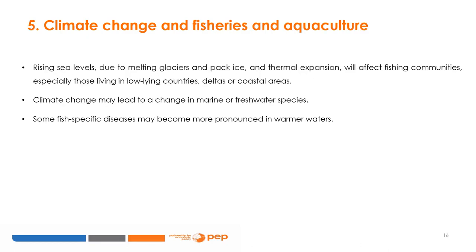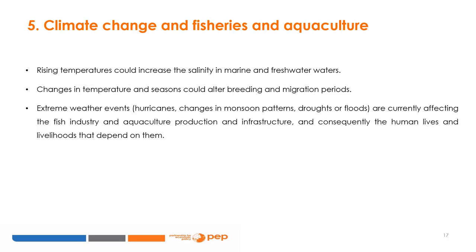Rising sea levels due to melting glaciers, pack ice, and thermal expansion will affect fishing communities, especially those living in low-lying countries, deltas, or coastal areas. Climate change may lead to a change in marine or freshwater species, and some fish-specific diseases may become more pronounced in warmer waters. Rising temperatures could increase the salinity of marine and freshwater. Extreme weather events such as hurricanes, changes in monsoon patterns, droughts, or floods are currently affecting the fish industry and aquaculture production and infrastructure, and consequently the human lives and livelihoods that depend on them.